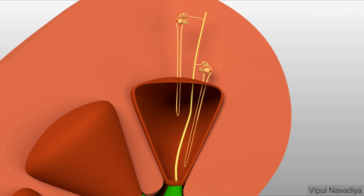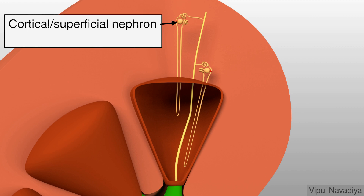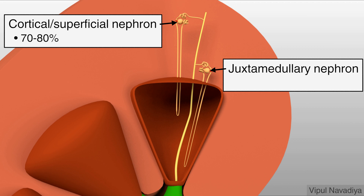There are two types of nephrons, based on the location of renal corpuscle. A nephron with its corpuscle lying in the outer cortex is called a cortical or superficial nephron. 70 to 80% of total nephrons are cortical nephrons. A nephron with its corpuscle located close to the medulla is called a juxtamedullary nephron. 20 to 30% of nephrons are of this type. The structure of both types is essentially the same, the only difference being the length of renal tubule.